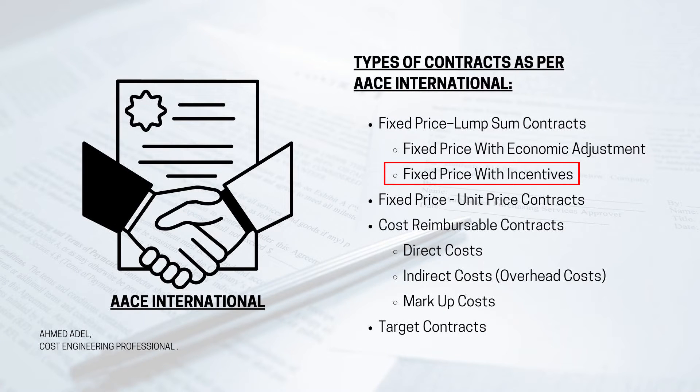The second variation is fixed price with incentives. It's still a lump sum contract — say 40 million for a building — but conditions are added: for example, if the contractor finishes the project two months early, there will be an incentive of five percent extra. This gives motivation to the contractor. The incentive is conditional and linked to a performance target like early completion.